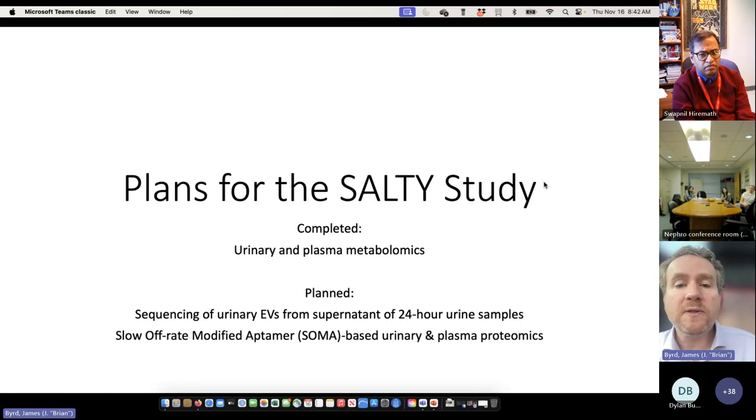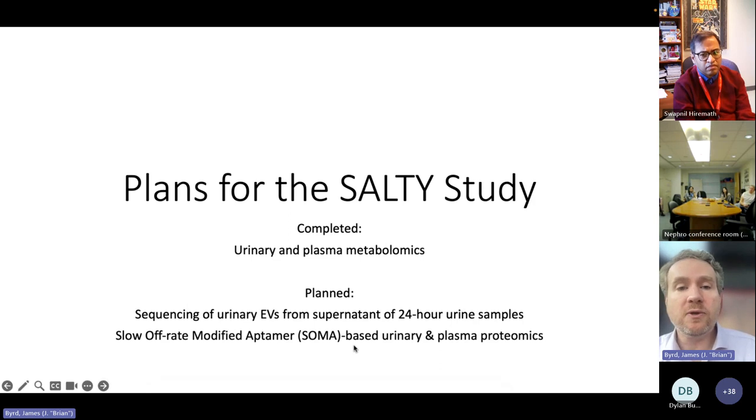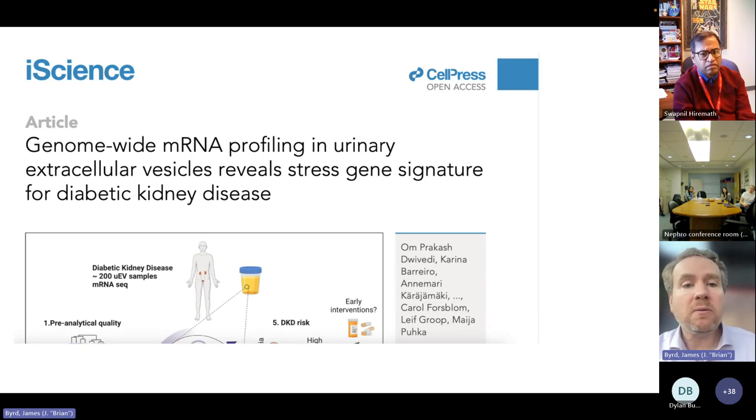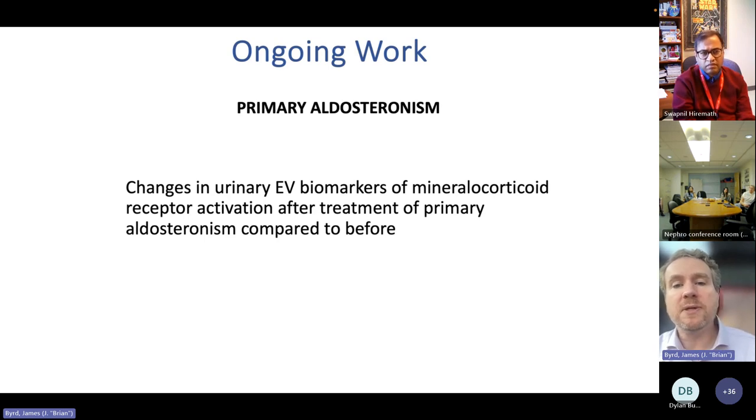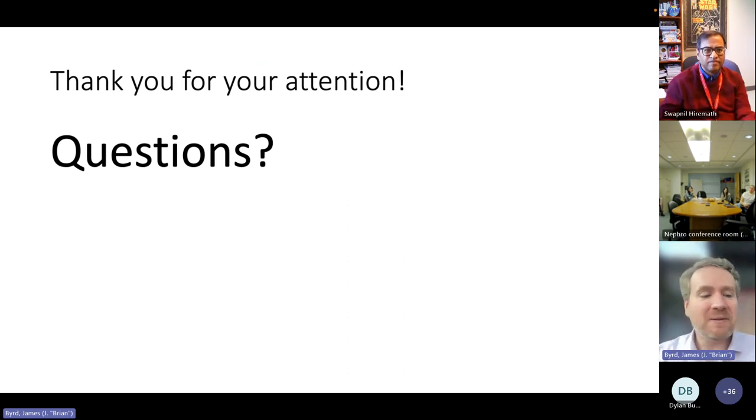We have a number of plans for the SALTI study. We completed the urinary and plasma metabolomics, which we're continuing to analyze. We have plans to do sequencing of urinary extracellular vesicles from the supernatant of 24-hour urine samples. We're going to be doing the slow off-rate modified aptamer or SOMA-based scan on the baseline and washout as well as the high and low salt urinary and plasma samples in a collaboration with Somalogic. This is a group in Finland with whom we're interested in collaborating to try to replicate that type of mRNA profiling. We're also looking at changes in EV biomarkers that reflect mineralocorticoid receptor activation before and after the treatment of primary aldosteronism.